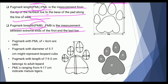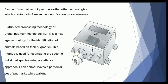PML of less than 6 cm likely belongs to a cat. A diameter of 5 to 7 cm may belong to leopard cubs. A pug mark length of 7 to 9 cm may belong to adult leopards, and a length ranging from 9 to 12 cm indicates a mature tiger. Digital Pug Mark Technology (DPT), also called Distribution Processing Technology, is a new-age technology used for determination and species estimation from pug marks and is now widely used alongside manual techniques.